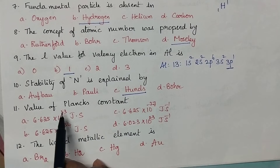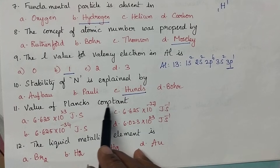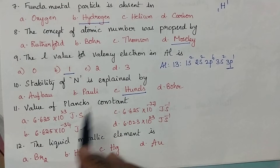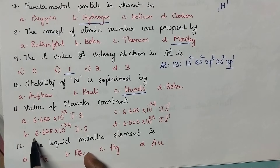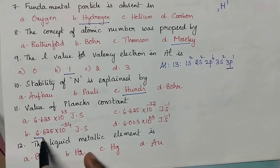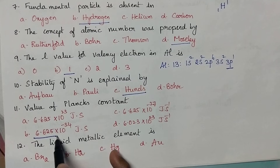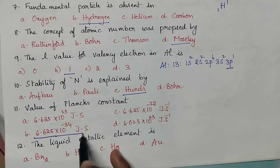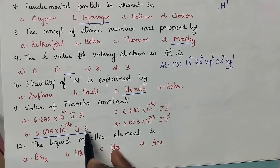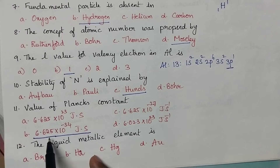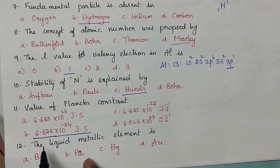The value of Planck's constant is 6.625 into 10 power minus 34 Joules second. So, option B is the right answer.